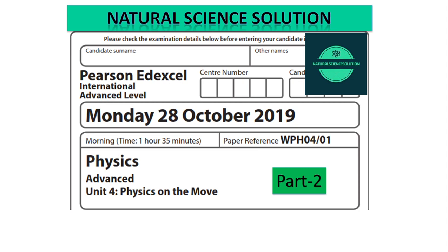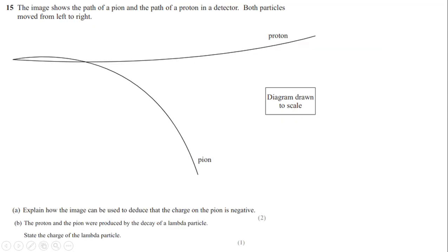Hi, welcome to the second video of sparse paper solution. This is A-level IEL Unit 4 2019. Let's start question number 15. The image shows the path of a pion and path of a proton in a detector. Both particles move from left to right. The diagram is drawn to scale — the pion coming down, proton going up.